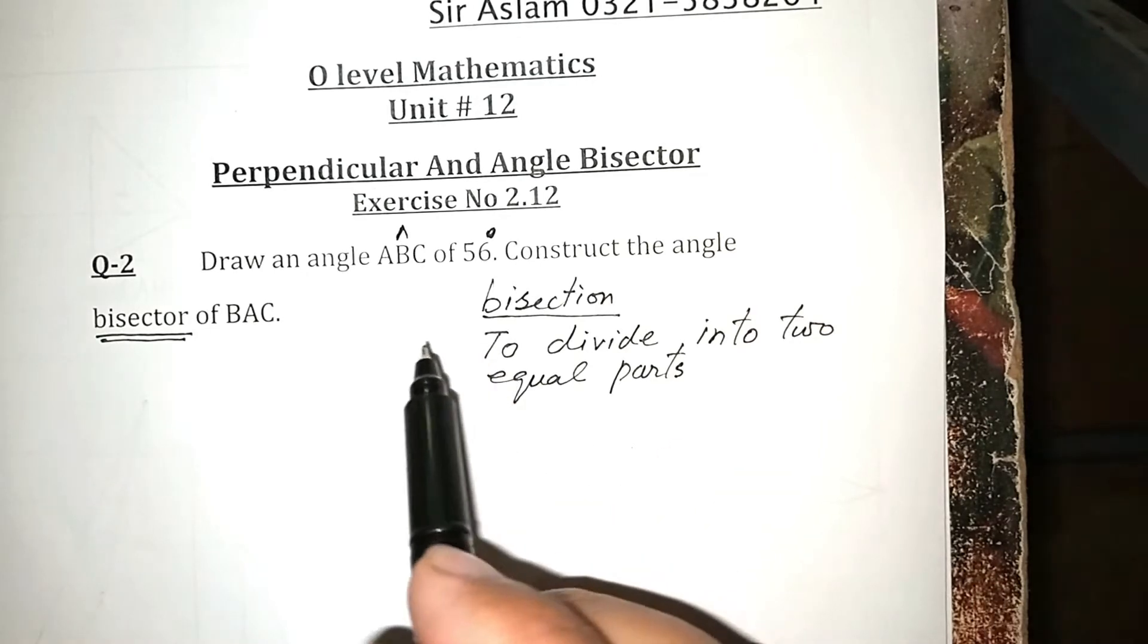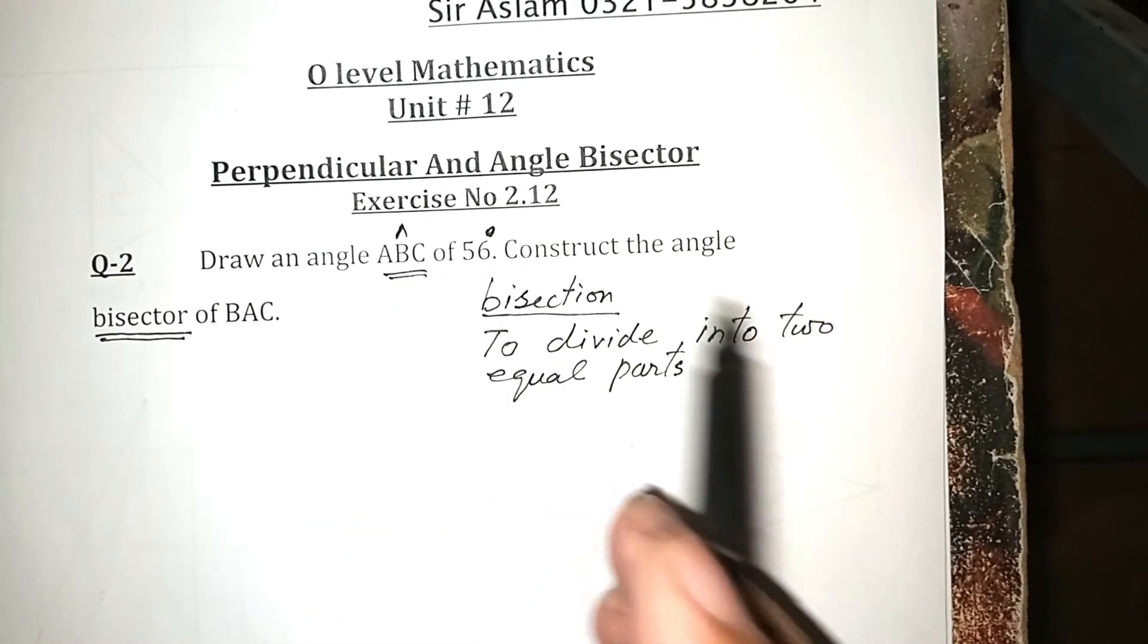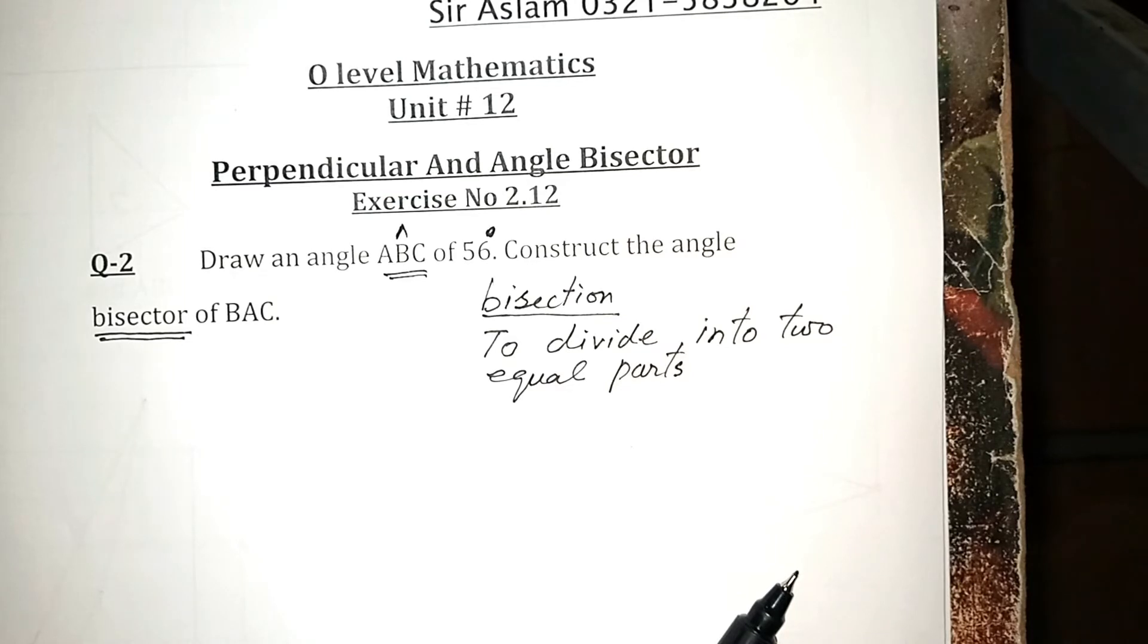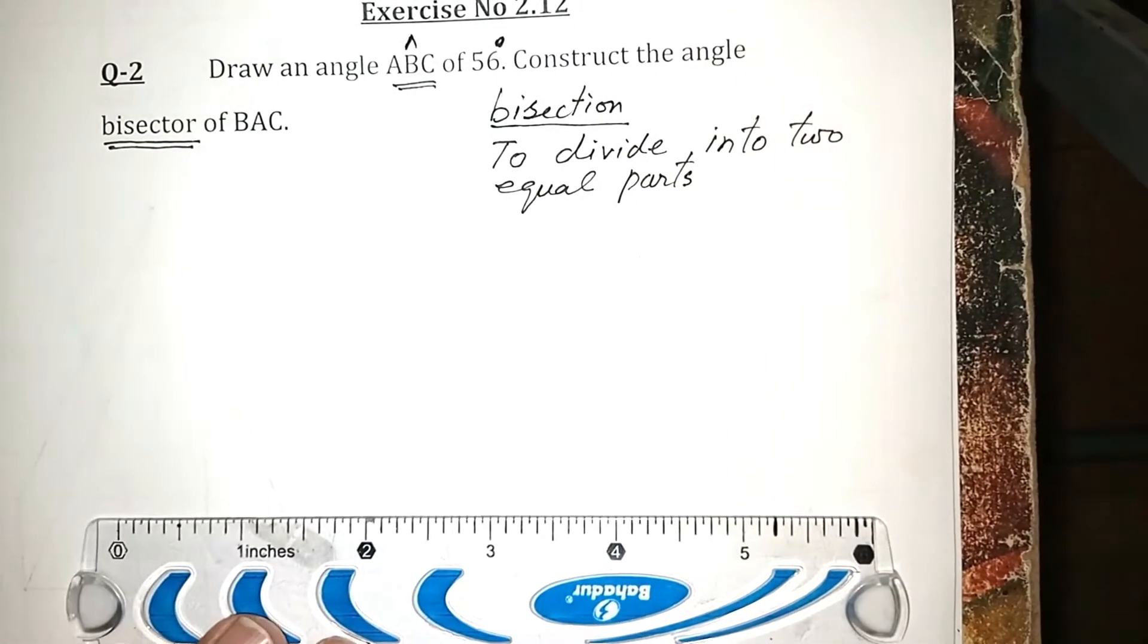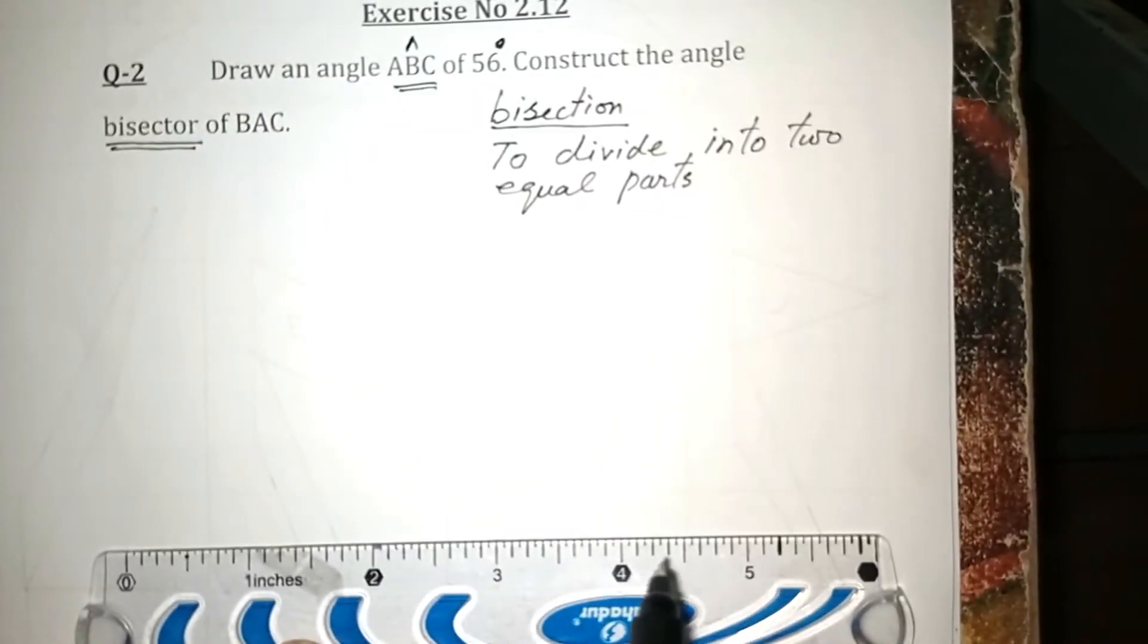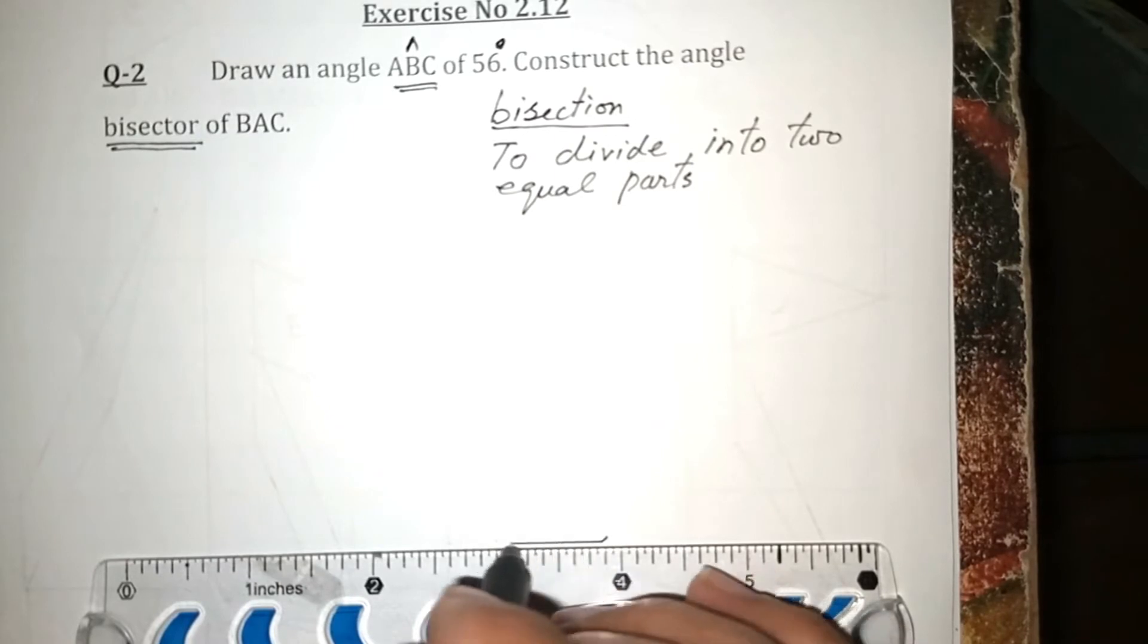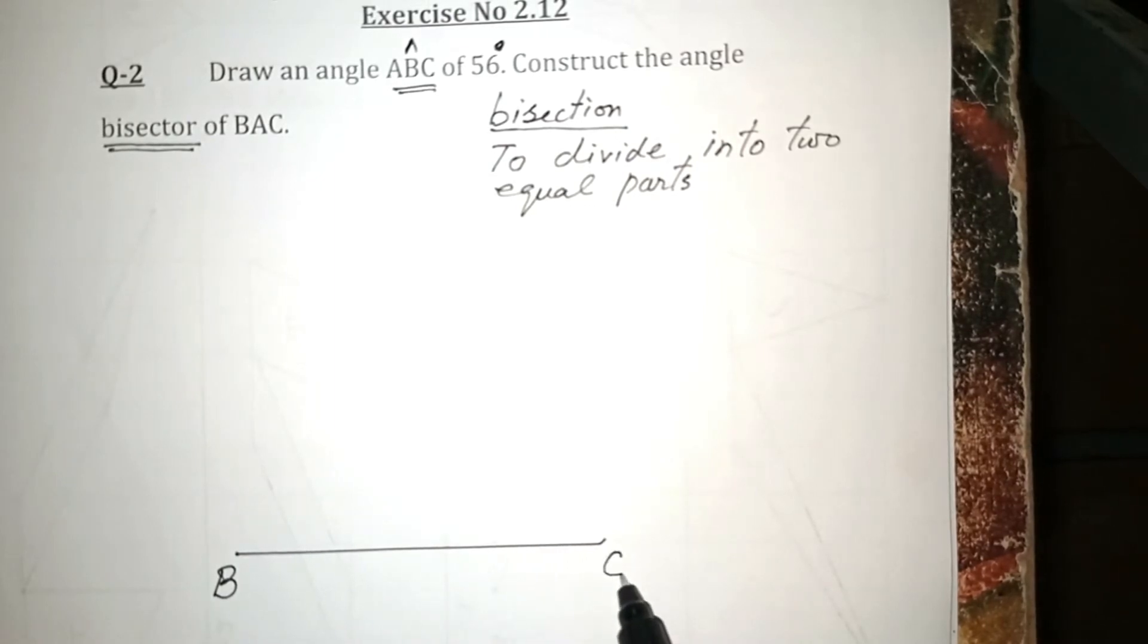In this case, we have to make the bisection at angle B. So take a line BC of your own choice, because the measurement of this line is not mentioned in the question. This is B and here will be C.